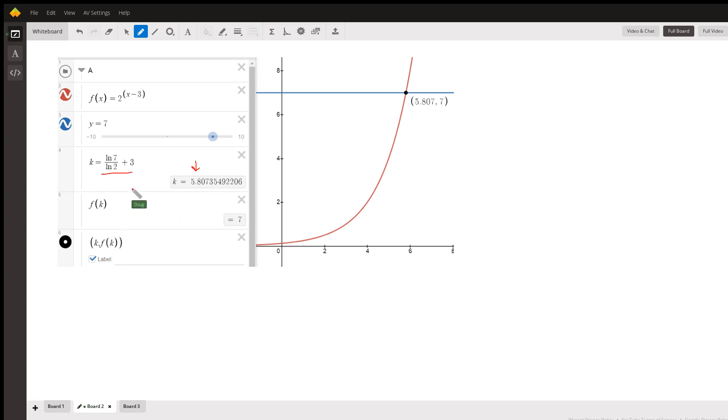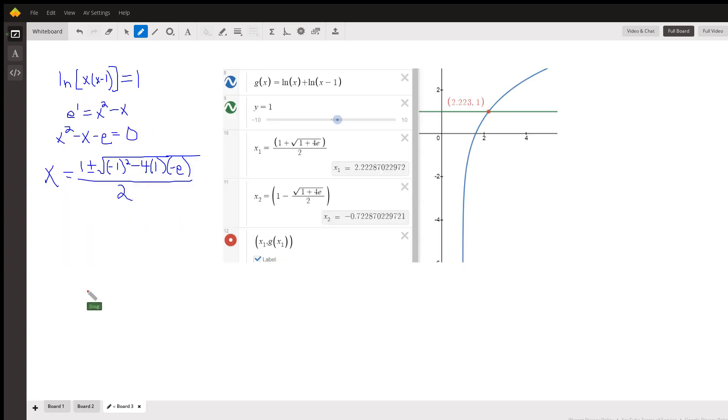And for the next problem, ln of x plus ln of x minus 1 is equal to 1. We're going to collapse these two logarithms into 1 by using a product property of logarithms. The sum of two logs with the same base is equal to the log of the product. And so this is x squared minus x.